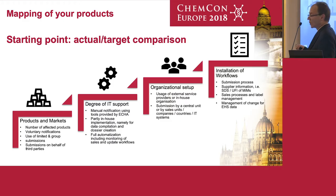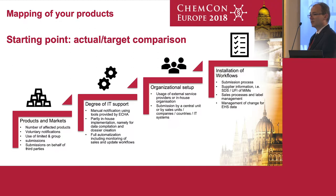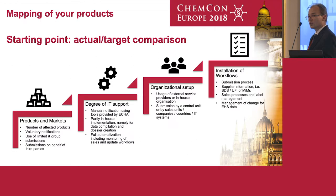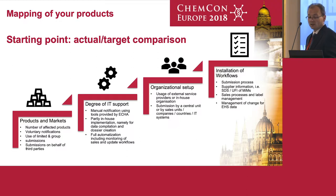This is already the case, but nowadays you also have to ensure that the company name provided on the label is consistent with the supplier name provided in the notification. The unique formula identifier needs to match the notification. And last but not least, you have to set up a management of change process if the product data relevant for the submission has been updated.